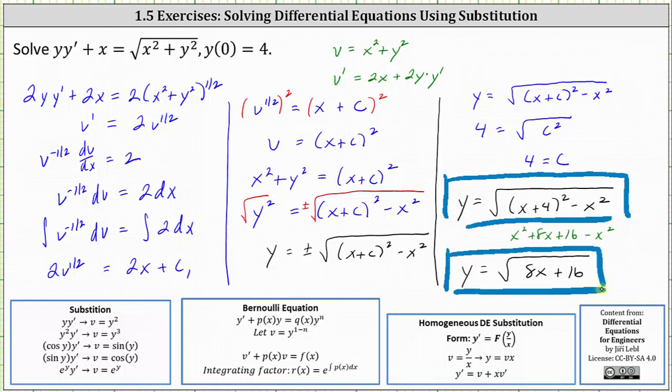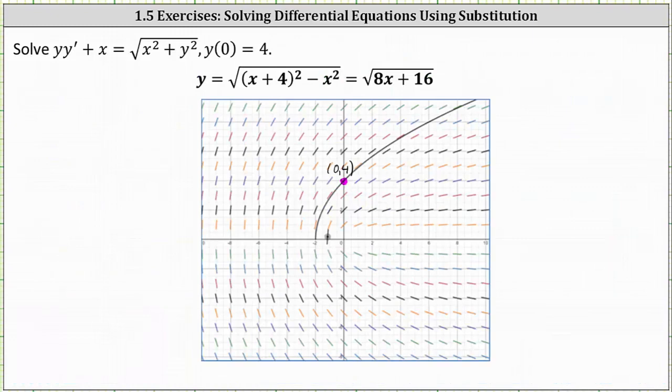Let's verify this graphically. In black we have the graph of our particular solution. Notice it is a function. It passes nicely through the slope field and passes to the point zero comma four given by the initial condition.